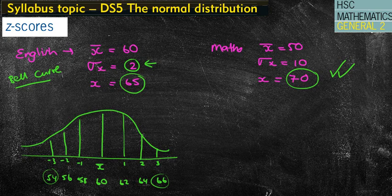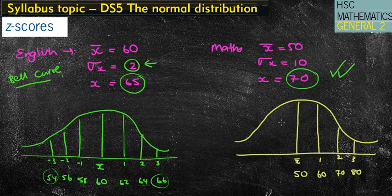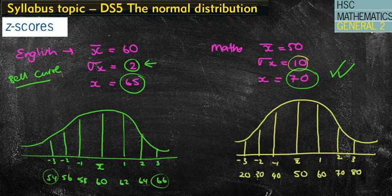The scores are quite close together. Let's draw a separate bell curve for mathematics. The mean for maths is 50 and standard deviations go up by 10. So 1, 2, 3 standard deviations above are 60, 70, and 80. Negative 1, 2, and 3 are 40, 30, and 20. You can see how the marks are much more spread out between 20 and 80. A smaller standard deviation pushes scores closely together and a bigger one spreads them out — hence why standard deviation talks about the spread of scores.